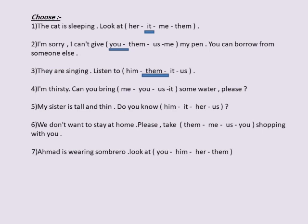Number four: I'm thirsty — can you bring me some water, please? The answer is 'me.' Number five: my sister is tall and thin — do you know her? 'Her' refers to my sister. Number six: we don't want to stay at home — please take us shopping with you. The answer is 'us'; 'us' is the object pronoun for 'we.'